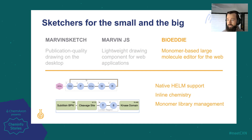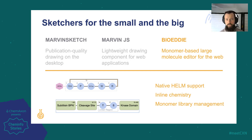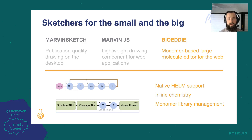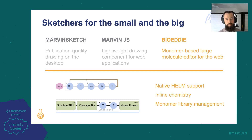BioEddy is ChemAxon's biological editor. While MarvinSketch and MarvinJS both support peptide drawing, BioEddy is superior when it comes to macromolecules with complex inter- and intramolecular connections. Brought to life by the Pistoia Alliance, the monomer-based HELM representation enables the depiction of multi-domain molecules built up even from non-natural residues. Thanks to this native HELM support, BioEddy enables the drawing of engineered peptides, bioconjugates, and other biologics right inside your web browser.